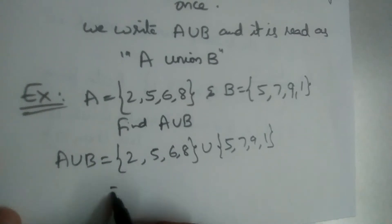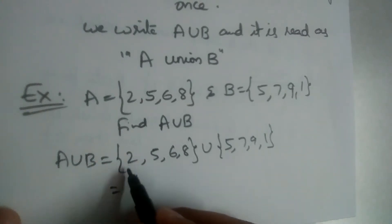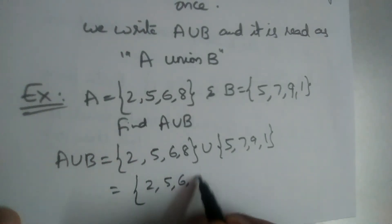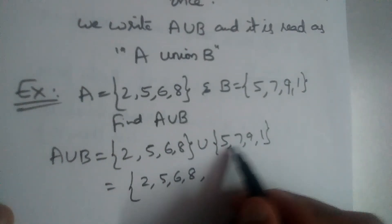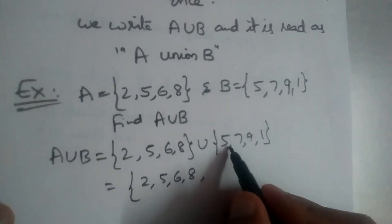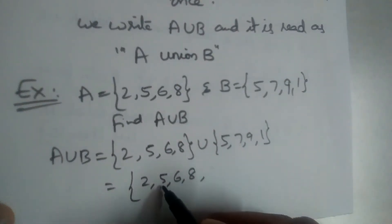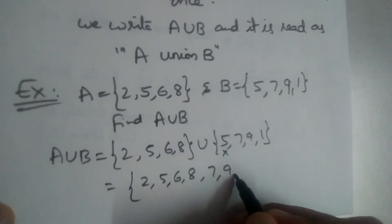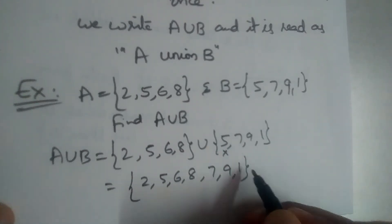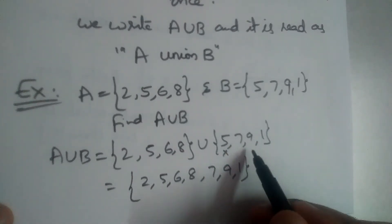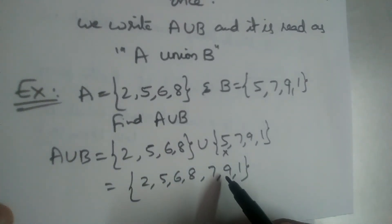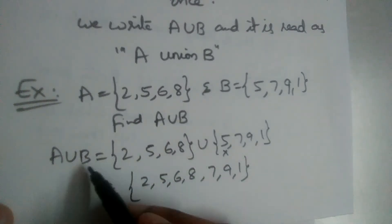A union B includes everything in set A: 2, 5, 6, 8. And everything in set B as well — but we should not repeat elements. Five is already written, so we don't repeat five. We add seven, nine, and one. So A union B = {2, 5, 6, 8, 7, 9, 1}.